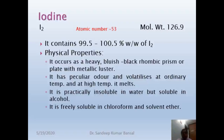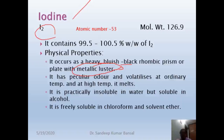The molecular formula of iodine is I2. It is a heavy, bluish-black, rhombic prism or plate with metallic texture. Although it is a non-metal, it has metallic texture. It has a peculiar odor, meaning we can identify iodine by its odor. It can volatilize — it is easily converted into vapors at ordinary temperature. This process is called sublimation, so iodine exhibits the phenomenon of sublimation. At high temperature, it undergoes melting.